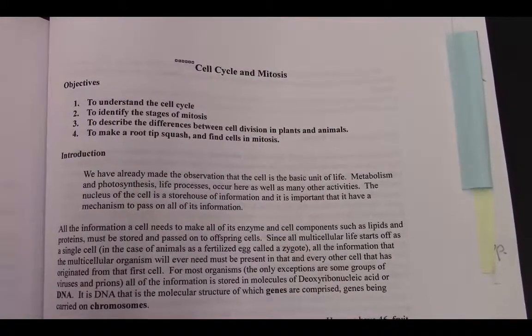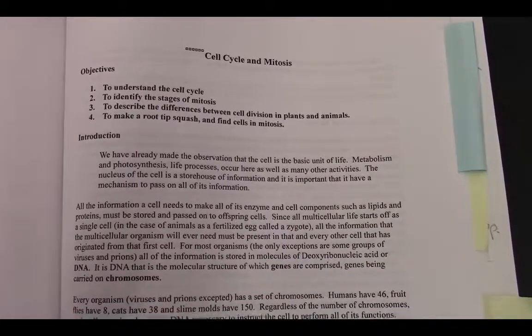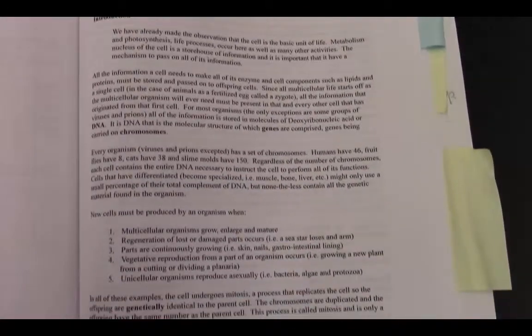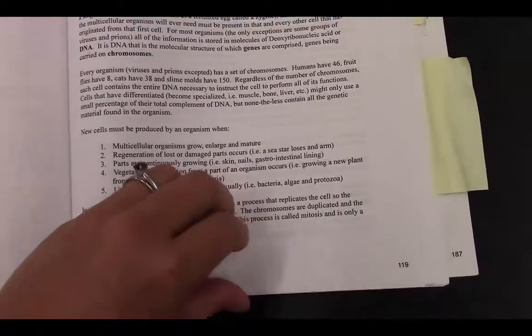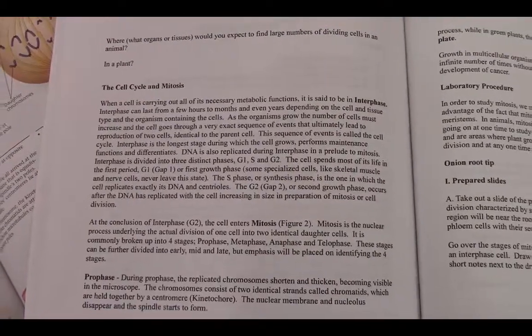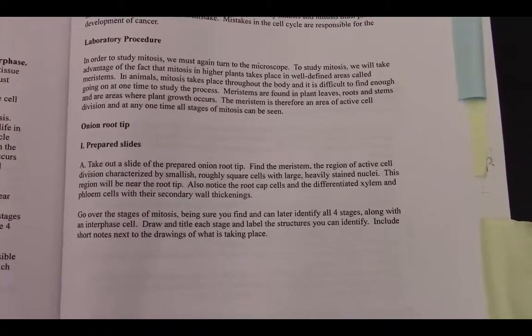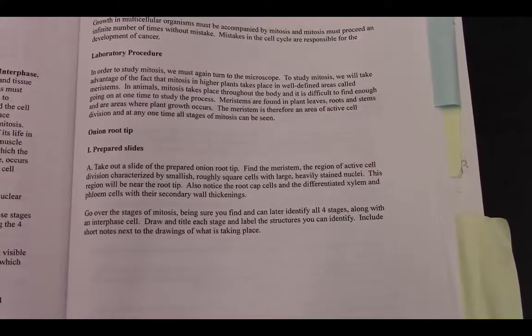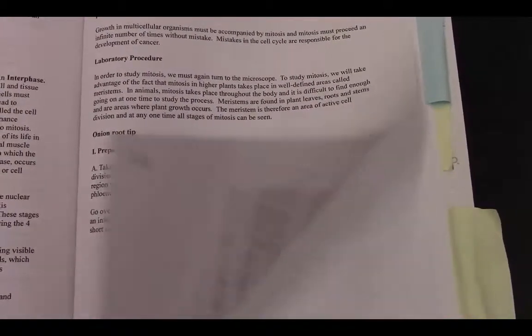The cell cycle and mitosis is the topic of this week's lab. We'll be considering the whole life cycle of the cell, but more specifically we'll be focusing on the phases during which the cell divides. You'll be preparing onion root tip slides, or at least looking at prepared ones depending on how much time we have in lab, and you'll be looking at some animal slides as well to observe cells in the process of cell division.